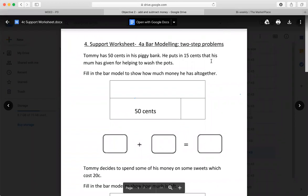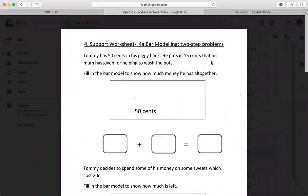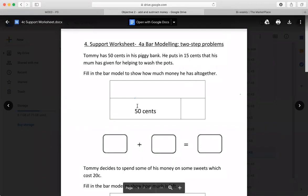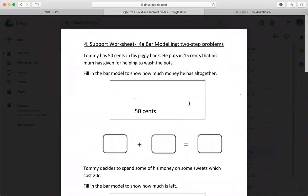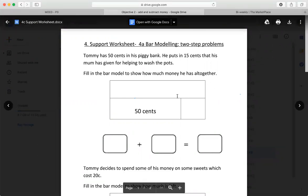All right. Now, Tommy has 50 cents in his piggy bank. He puts in 15 cents that his mom has given him for washing the pots. Fill in the bar model to show how much money he has altogether. So we know he started off with 50 cents. He put in 15 more. So 50 plus 15 is going to give you something. Go ahead and work that out and put your answer up here.